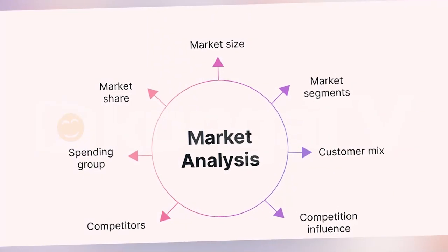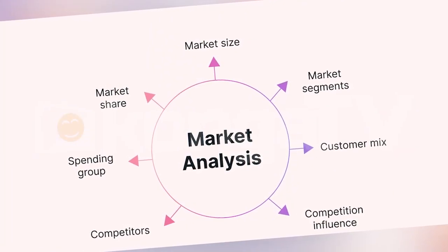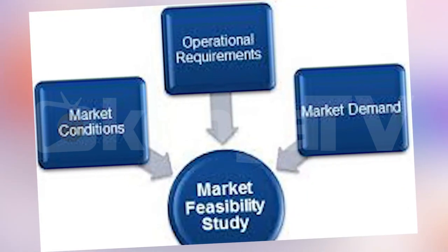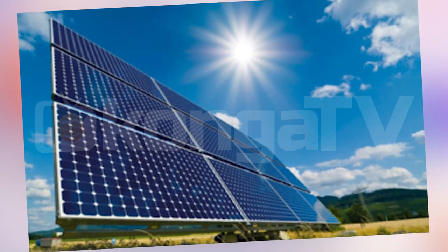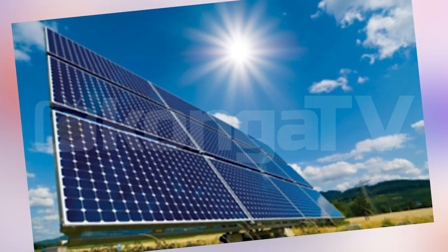Stage 2: Market Research and Feasibility. Now that you have an idea, you need to ask yourself: will this idea work? This is where market research comes in. You need to figure out if people actually need your product, who your target audience is, and how much they're willing to pay for it. This is important because many great ideas fail because they didn't solve a real problem or the cost was too high. For example, if you're creating a solar-powered product, you need to consider the price point for people who want affordable and reliable energy solutions. Check your competitors too, to see what they're doing right and what they're doing wrong.